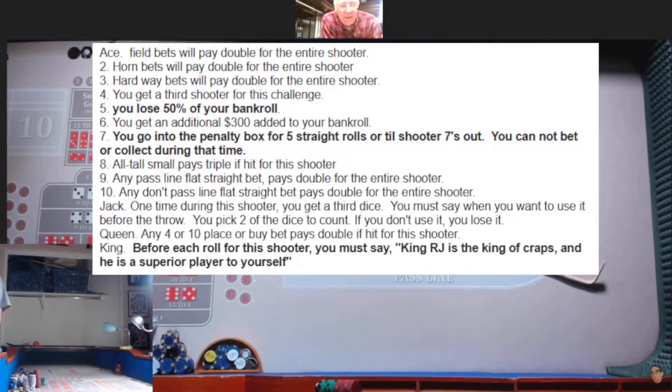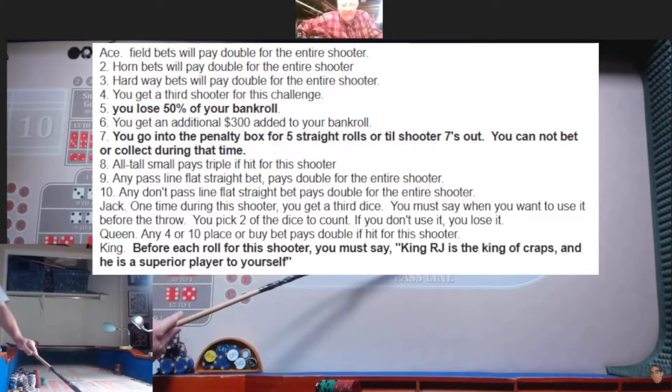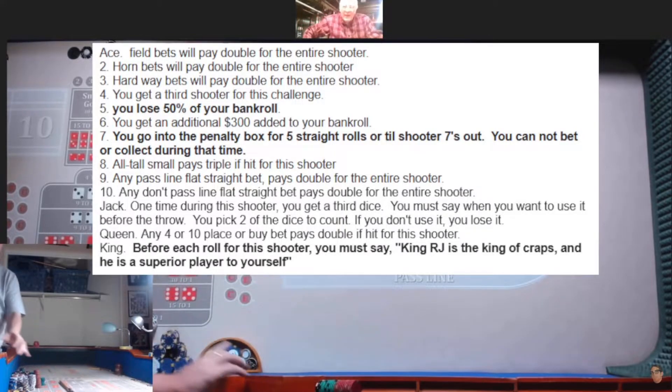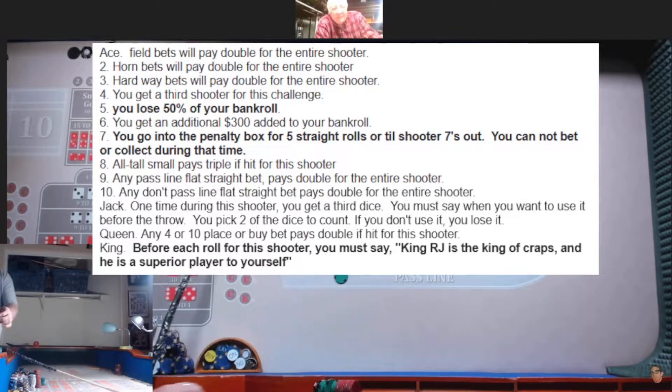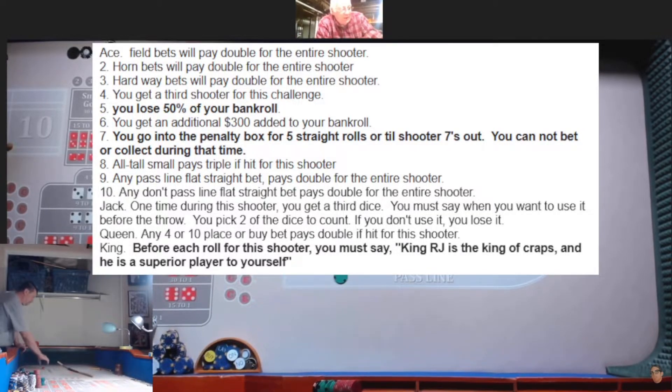And I'm not using it on the come out. Okay. Please remember, you got to let me know before you use it. And if you don't use it, you lose it. Yeah, okay. Come out roll. Any bets? Yeah, give me 25 on the pass line and 25 on the field.